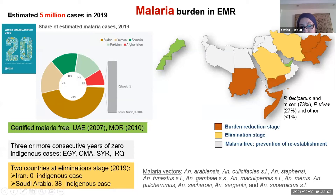Countries at the elimination stage include Iran, which has reported zero indigenous cases for more than three years, and Saudi Arabia, which reported 38 indigenous cases in 2019. Based on the WHO Malaria Report 2020, an estimated 5 million cases were reported in 2019. On the left, the pie chart shows the share of estimated malaria cases from each country.